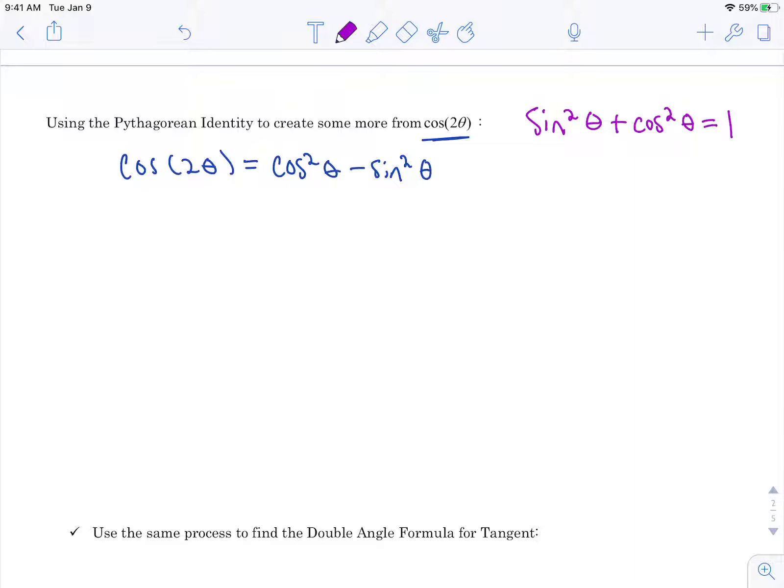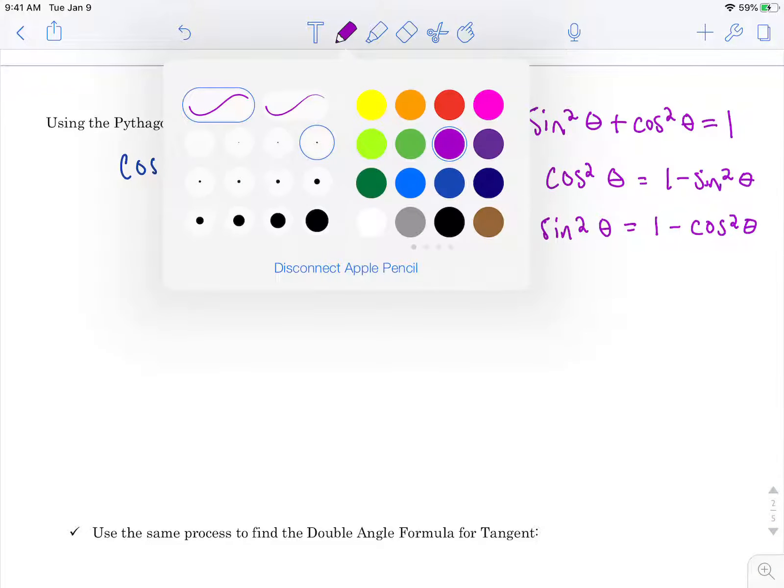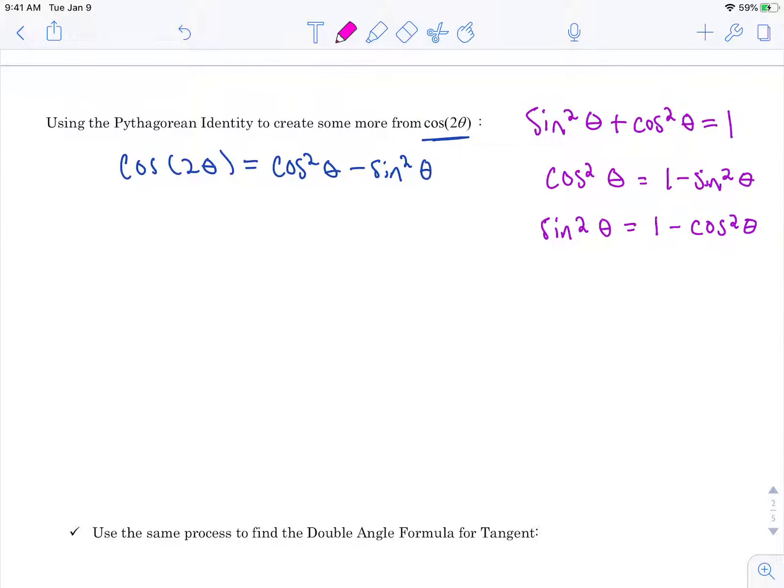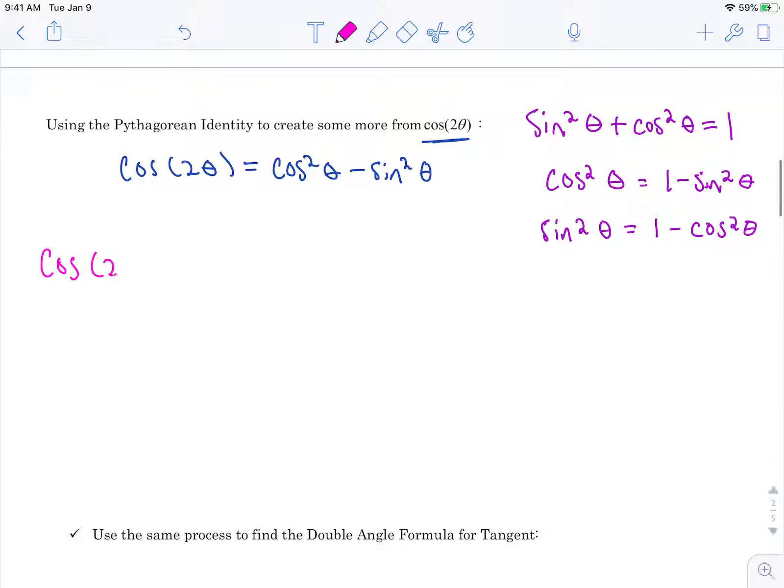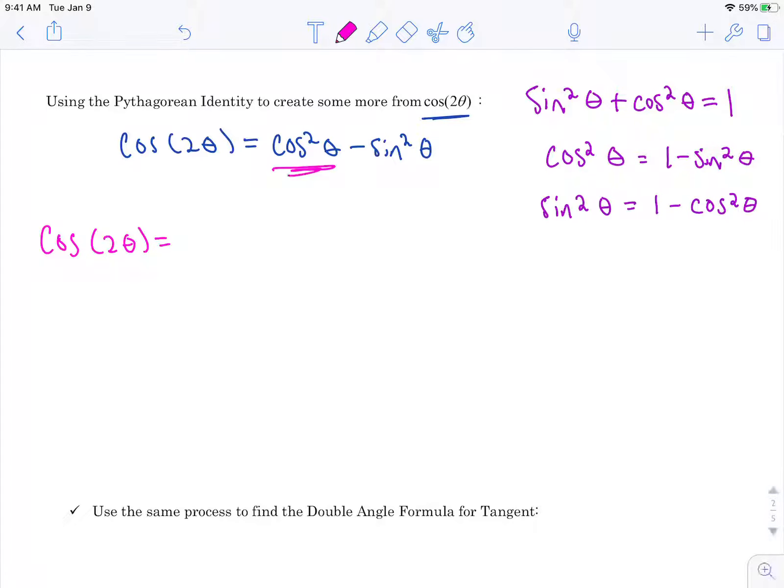So what I can do though is I can solve this identity for cosine squared and I get 1 minus sine squared. So I'm going to go over here and do some replacing. So cosine 2 theta, I'm going to go ahead and replace cosine squared with what it equals in the identity. So I have 1 minus sine squared minus sine squared. Combine like terms and I get yet another formula for cosine 2 theta. Again you're going to be given all these formulas. You do not have to memorize them and you'll use whichever one works best for the problem.